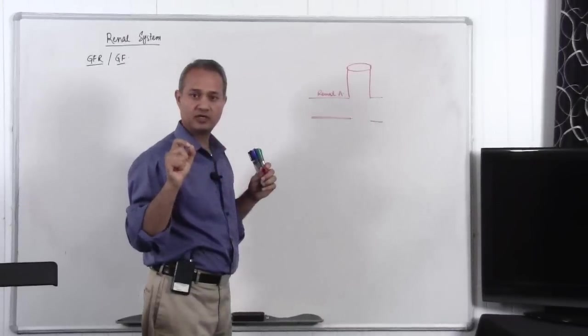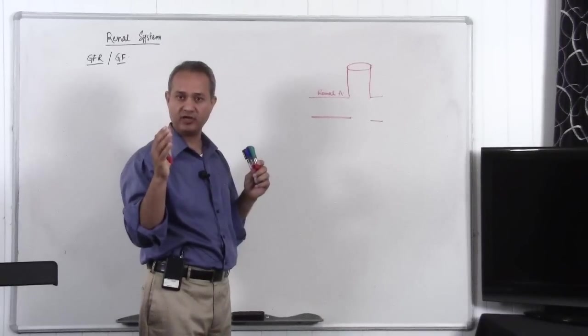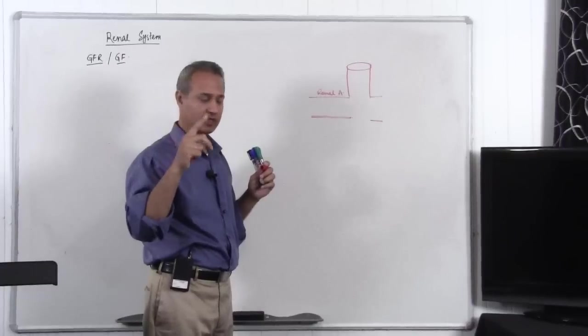So I am going to use a unit, functional unit of the kidney which is a nephron and a glomerulus attached to it and we will talk about that.